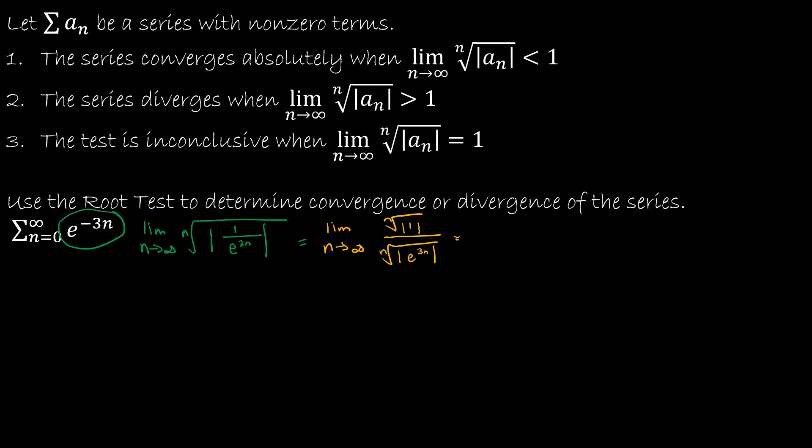And again, the reason I did that is because I can easily take the nth root of 1, because the nth root of 1 is 1. So now I've been able to get rid of the absolute value and the square root in my numerator. In my denominator, I have the nth power and the nth root canceling, and so I have the absolute value of e to the third. And e to the third is always going to be positive, so I don't need the absolute value either.